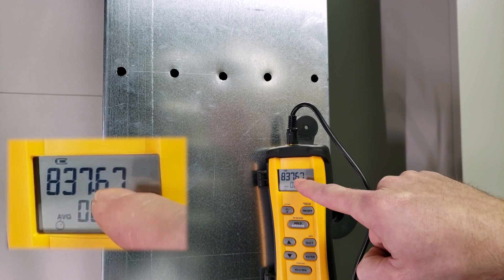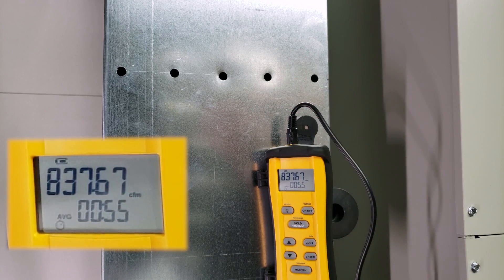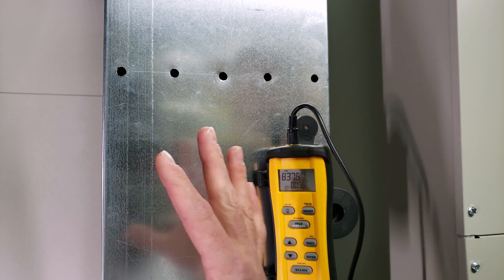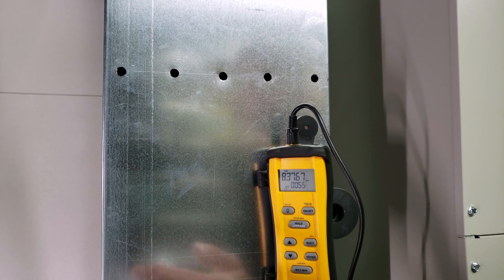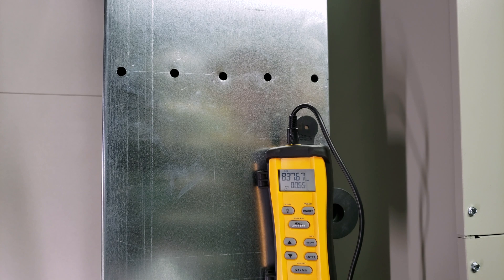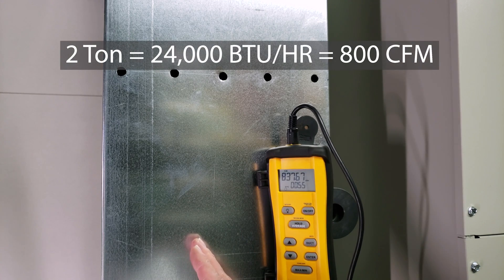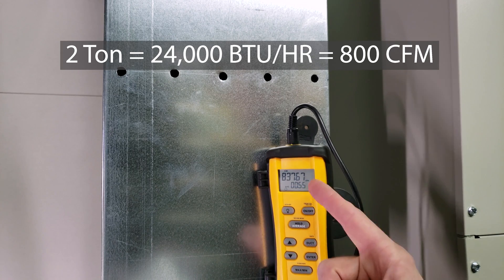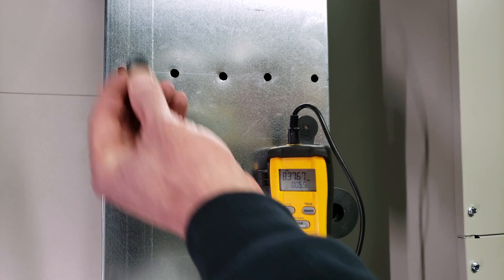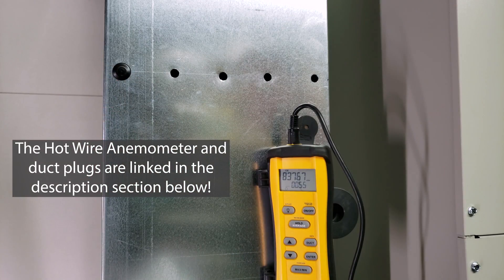Our CFM is 837. Now I'll prove this is very close to what it should be using the temp rise formula. This is a two-ton system, and 837 CFMs is what's needed. You need about 400 CFMs per ton. 400 CFMs equals 12,000 BTUs of heat removal capacity, which equals one ton. For a two-ton system (24,000 BTUs), we need around 800 CFMs. I can now put in my duct plugs to close the holes.